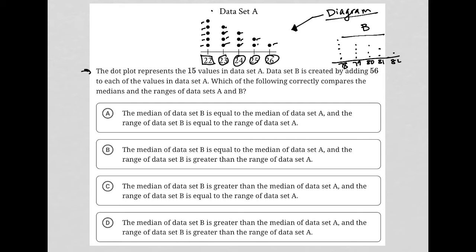The question asks which of the following correctly compares the medians and ranges of data sets A and B. If we're comparing, the median value is going to be greater for data set B than for data set A because all the data points in data set B are 56 greater than data set A.